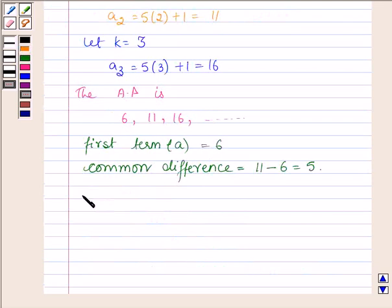According to the question we have to find the sum of n terms of the given AP. So the sum of n terms will be n upon 2 into 2A plus n minus 1 into D.